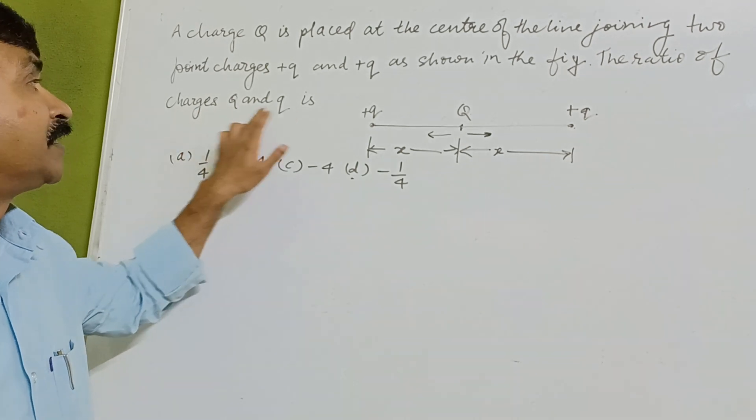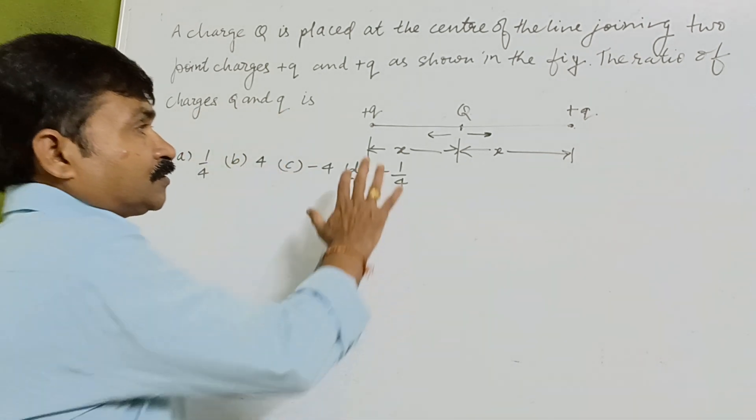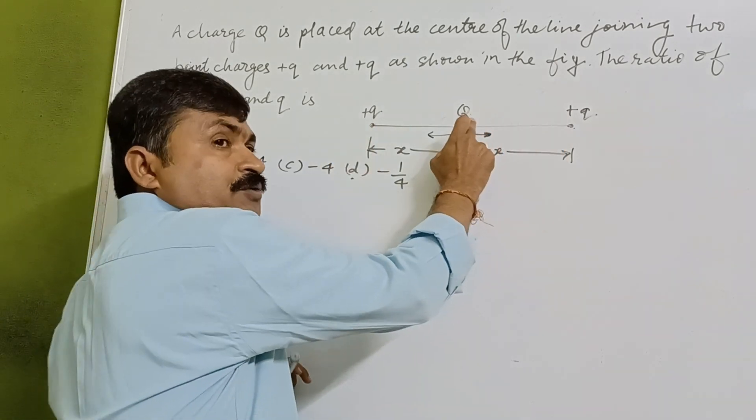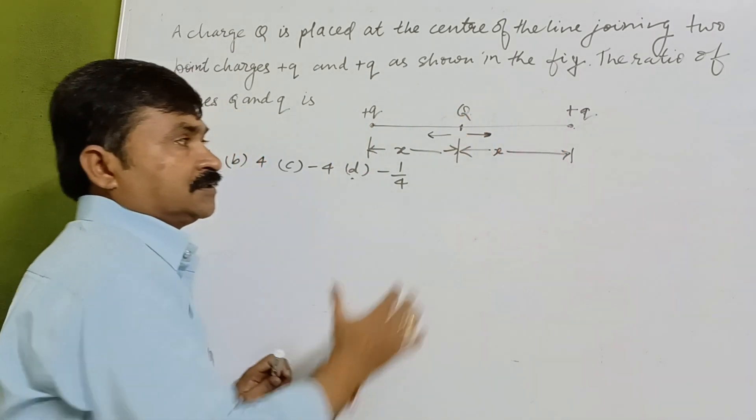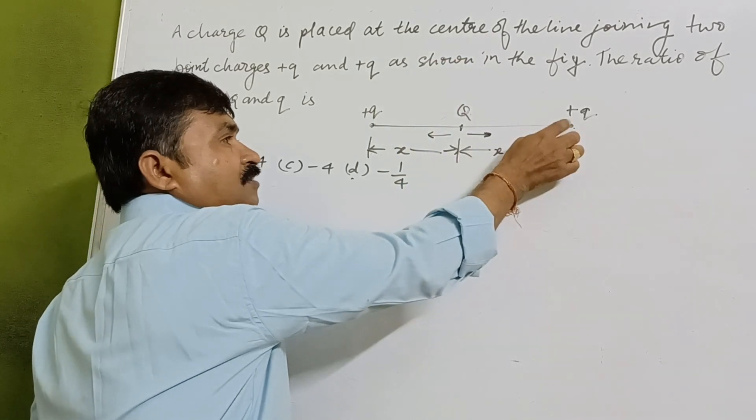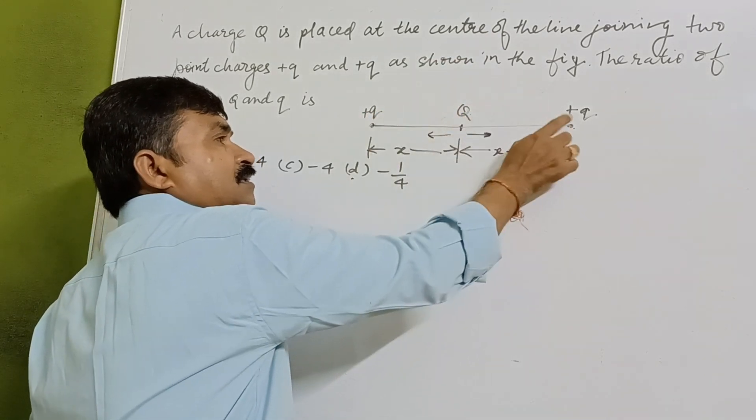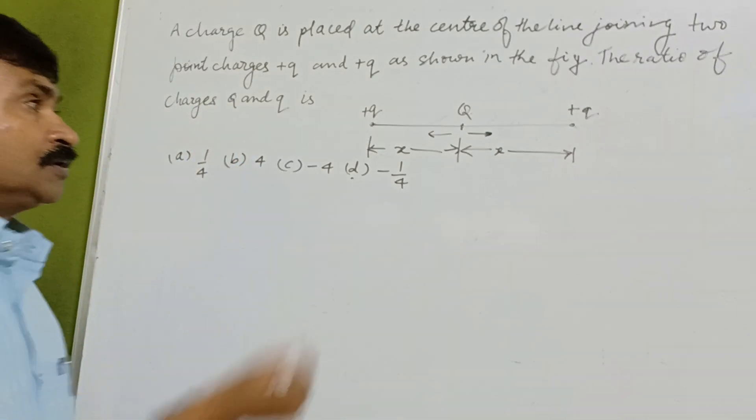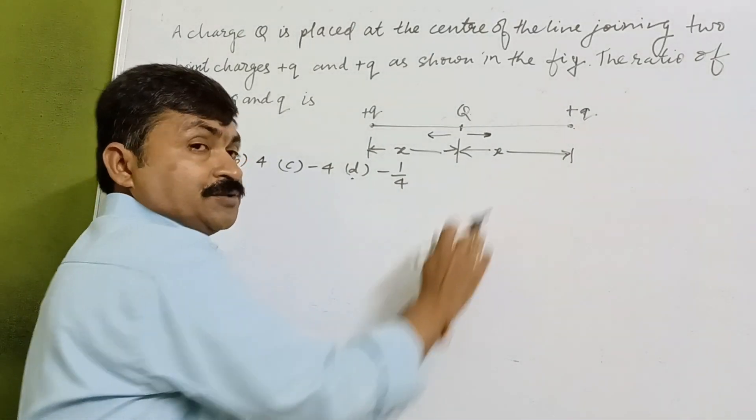Now I will go through this. These two charges were there and Q is placed at the center. So if you calculate the force on this because of this and because of this, it must be equal to zero. According to Coulomb's law, using Coulomb's law...